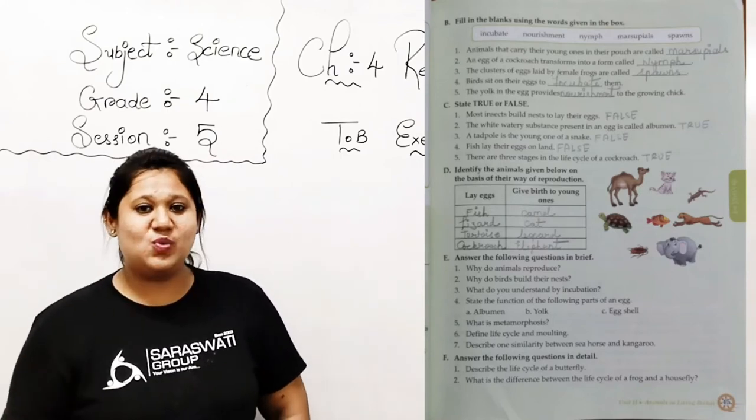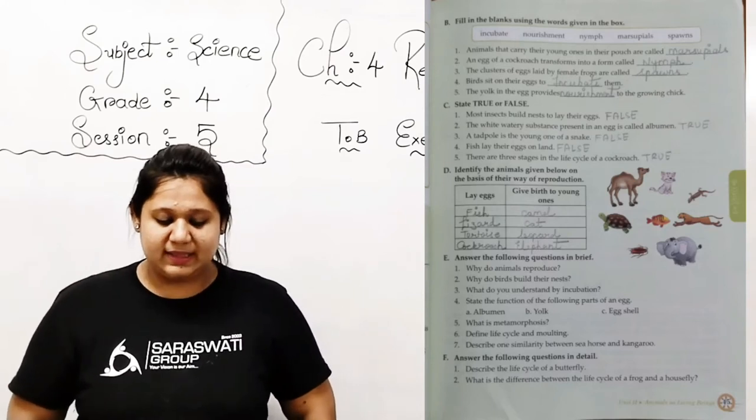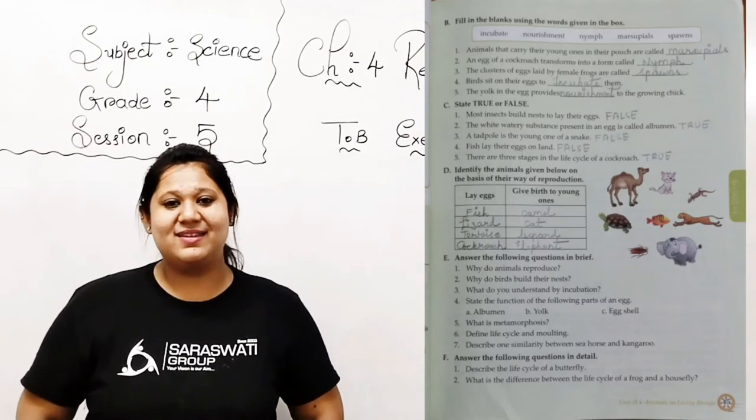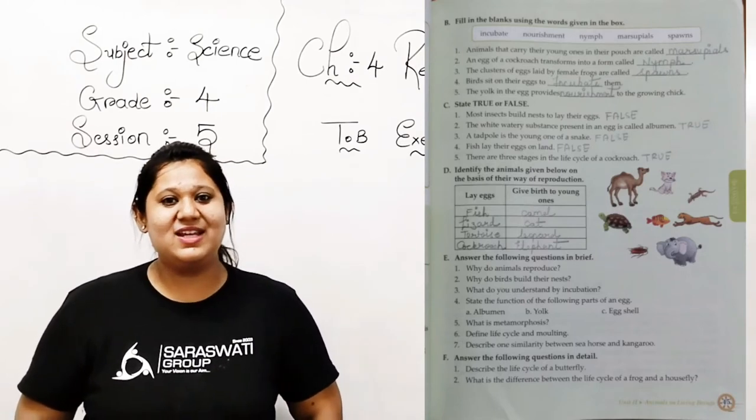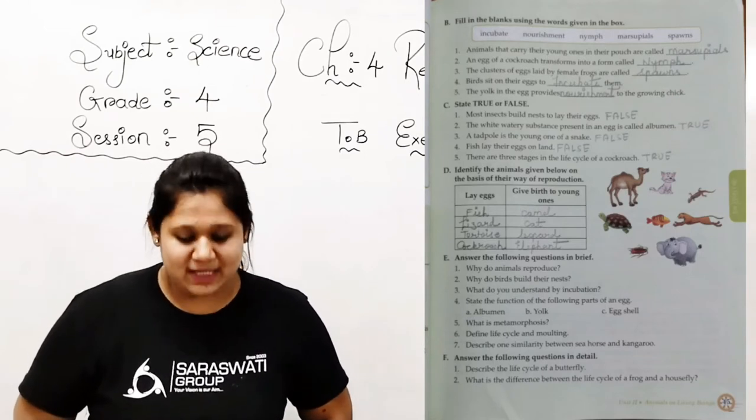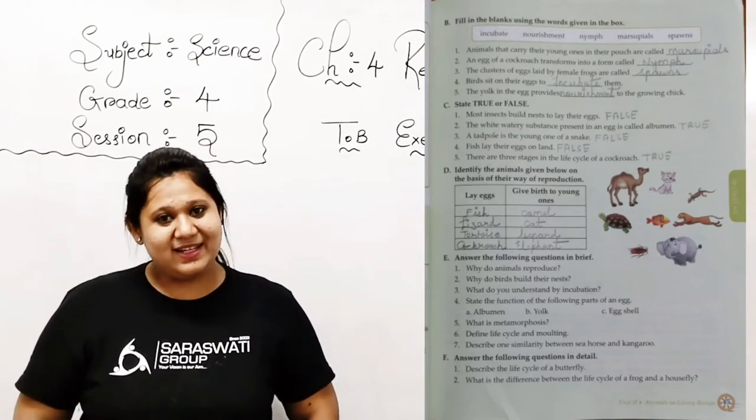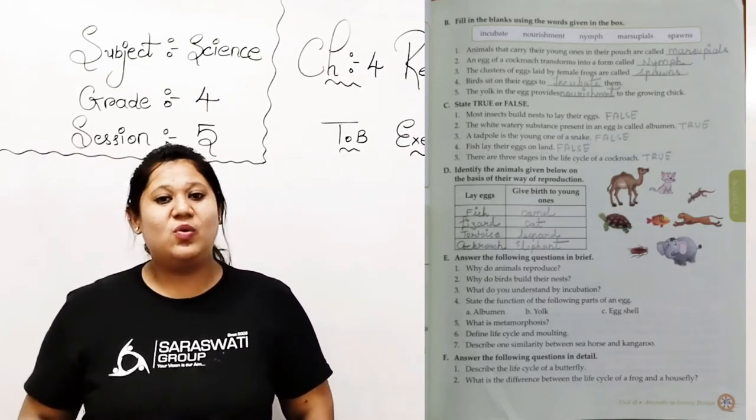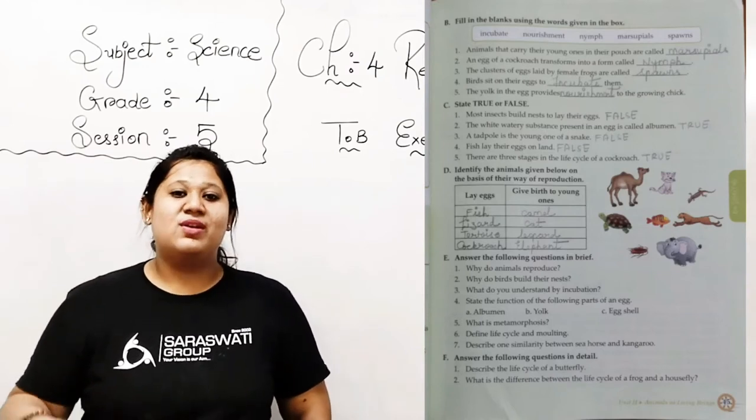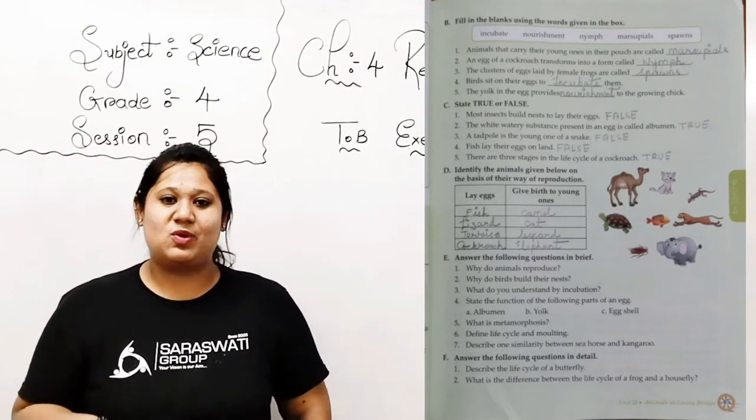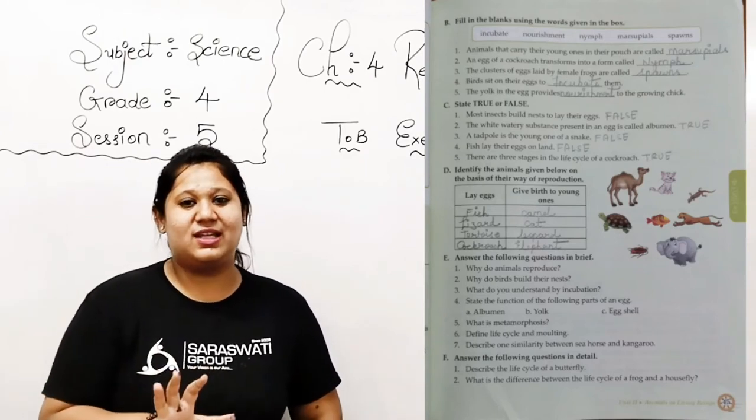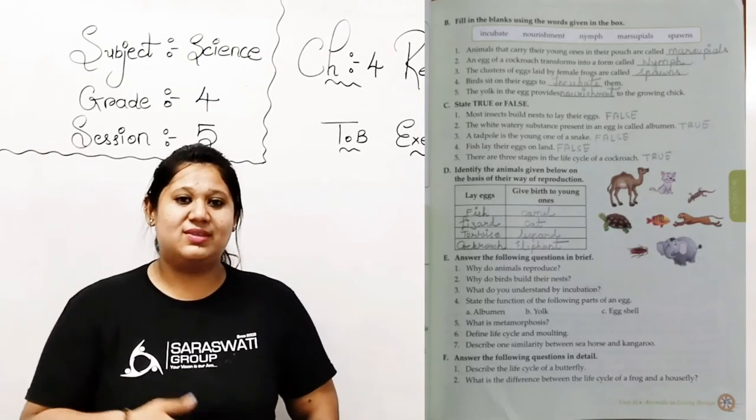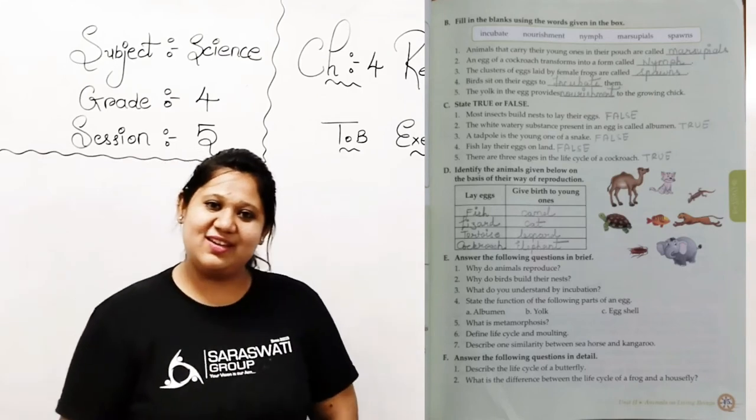Now number 5, last one: the yolk in the egg provides blank to the growing chick. What does it provide? Yes, our last option is remaining, right? So it provides nourishment to the growing chick. Clear? N-O-U-R-I-S-H-M-E-N-T. Nourishment. During reproduction process, they all need some nourishment to grow inside, right? So yolk provides nourishment to the chick. Clear?